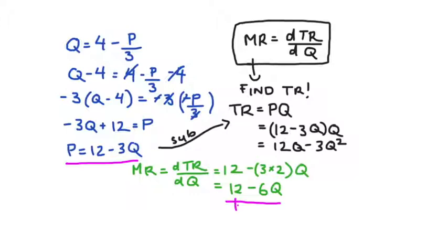You can see, actually, comparing the two functions, the intercept or constant term is exactly the same. But the coefficient on our Q variable has been doubled in the case of the marginal revenue function.